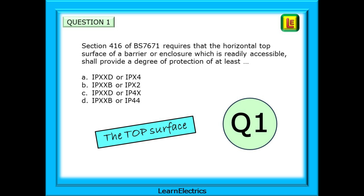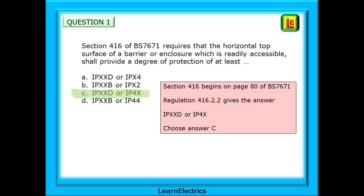Question one: Section 416 of BS 7671 requires that the horizontal top surface of a barrier or enclosure, which is readily accessible, shall provide a degree of protection of at least what? The question tells us to go to section 416, which begins on page 80 of BS 7671. Looking at regulation 416.2.2 we have the answer: the degree of protection should be at least IPXXD or IP4X — choose answer C.